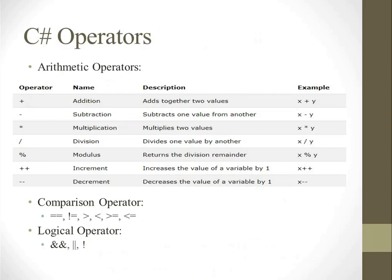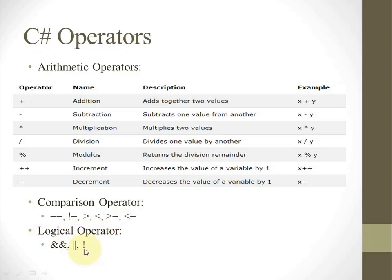Next, what are the C-Sharp operators? Number one, arithmetic operators, which include plus, minus, multiply, divide, modulus, increment, and decrement — used the same way as in other programming languages. Comparison operators include equal, not equal, greater than, less than, greater than or equal to, and less than or equal to. Logical operators include AND, OR, and NOT operators — same as in C++ and Java.